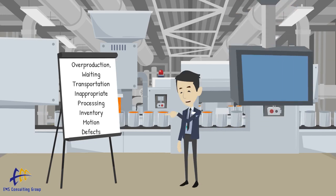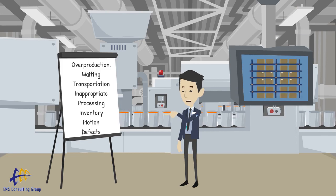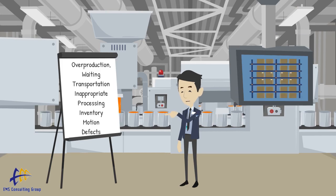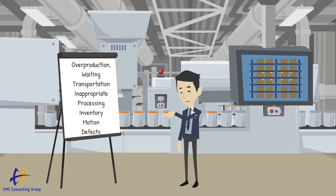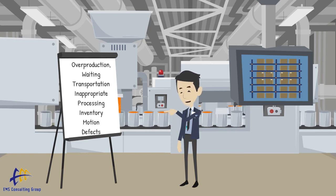Let's begin with overproduction. Overproduction is producing more material or information than the next downstream customer requires. Ohno considered overproduction to be the chief waste, since it amplifies many of the other wastes.